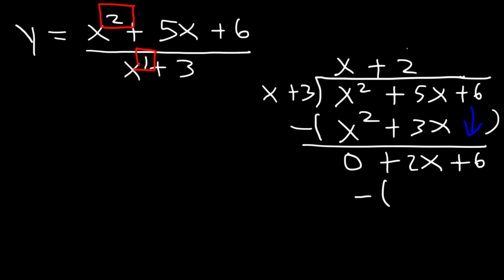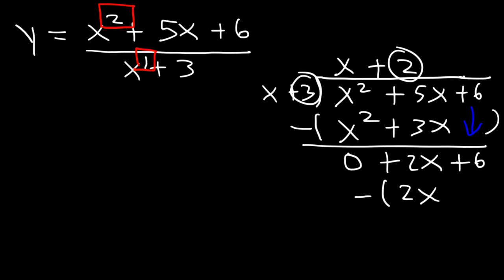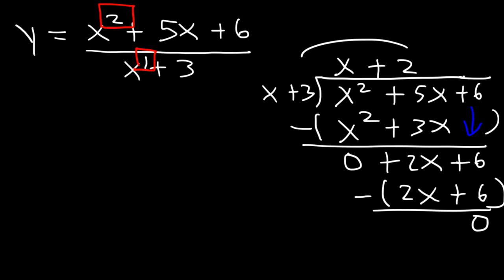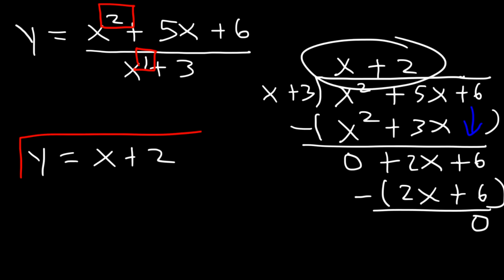Multiply first: 2 times x is 2x, and 2 times 3 is 6. There is no remainder — we get 0. What's on top from the division is the slant asymptote: y is equal to x plus 2. And that's how you find it.